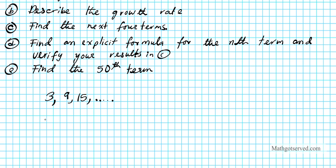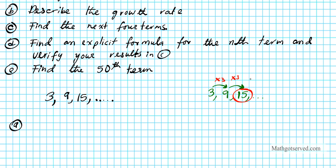Is this sequence arithmetic or geometric? Arithmetic sequences involve a common difference — you constantly add — whereas geometric sequences involve a multiplicative relationship where you multiply by the same number. Let's test if it's geometric: to go from 3 to 9, we multiply by 3. But if I multiply 9 by 3, I get 27, not 15. Hence this is not a geometric sequence.